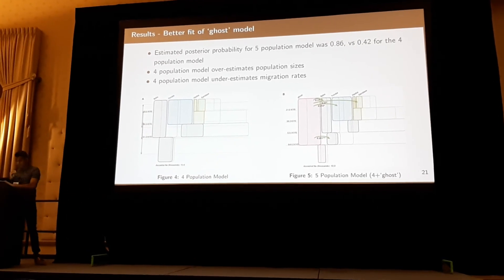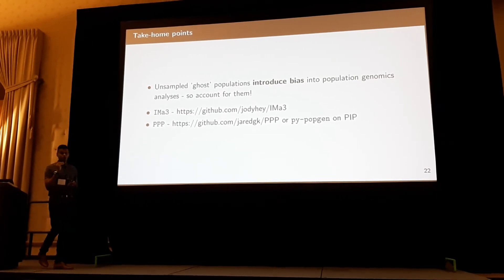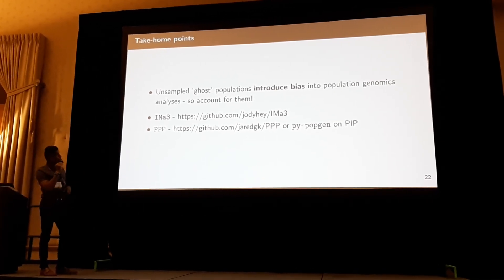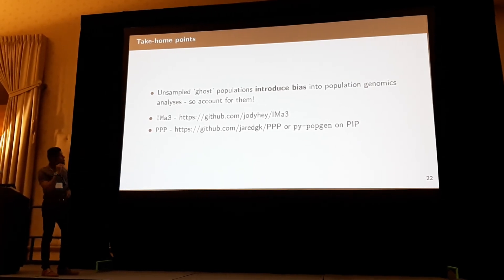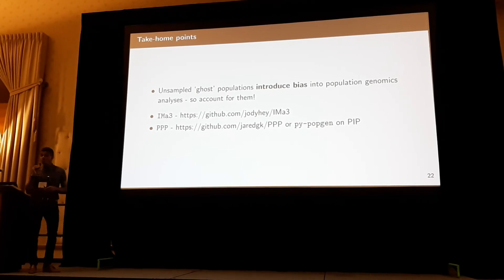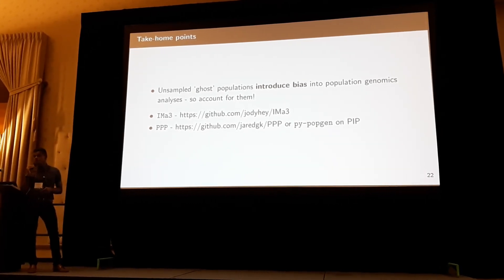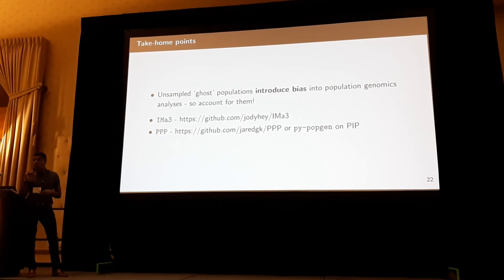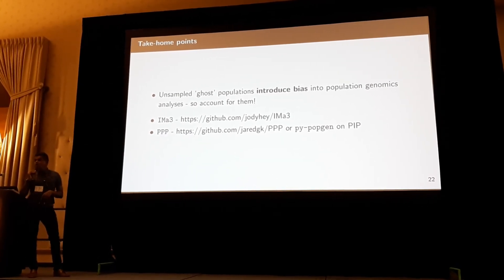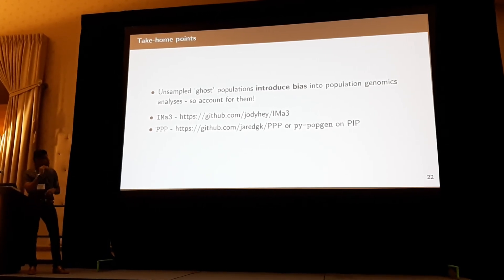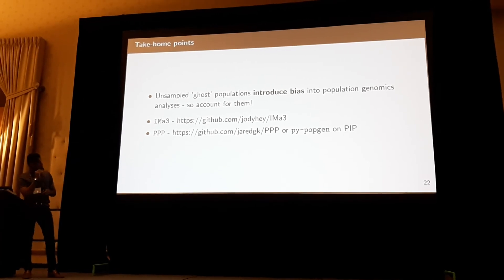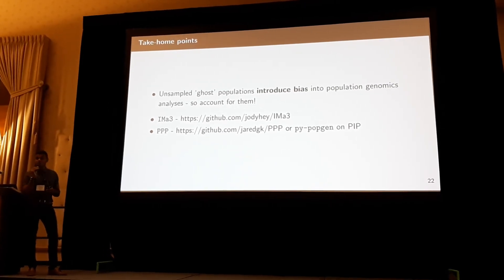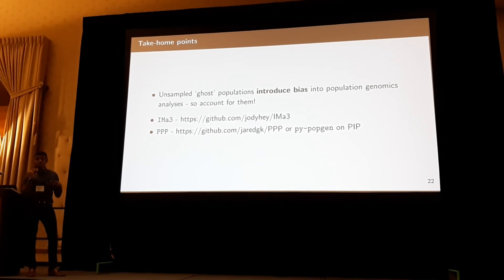The takeaway: whatever kind of dataset you have, unsampled ghost populations can introduce bias in your estimates, so account for them. There are lots of software that allow you to do that. IMA3 works very well because it also estimates the tree topology, so you don't have to fix the topology when estimating demographic history. You can do demographic inference with varying topology models under lots of loci using parallelized methods with hundreds of loci and get pretty reliable estimates. We also have a pipeline called PyPopGen — PPP — available now, developed with colleagues. Do check it out.